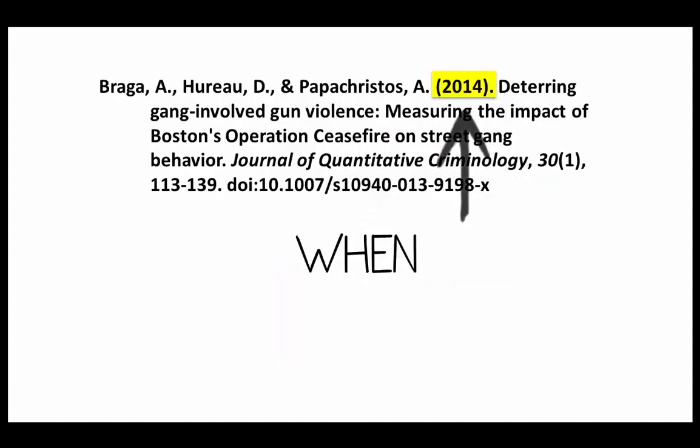When an article was written allows you to decide if it will be useful to you. Curious about how autism has been researched from 1960 to today? Search for older articles. Need to know current treatment options for autism? Find research from the past couple of years.